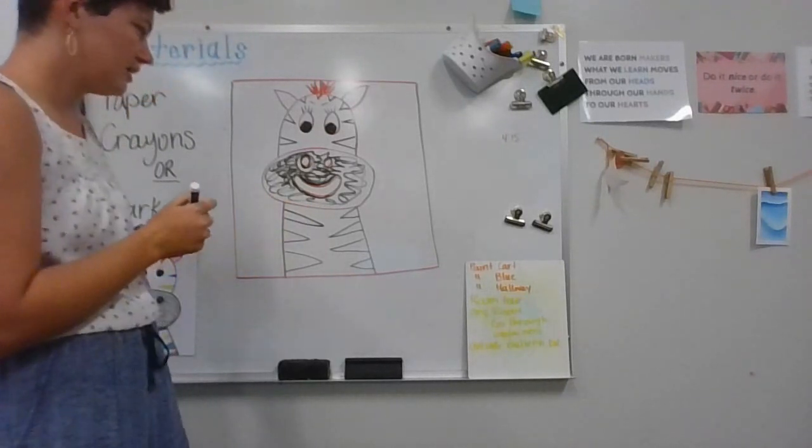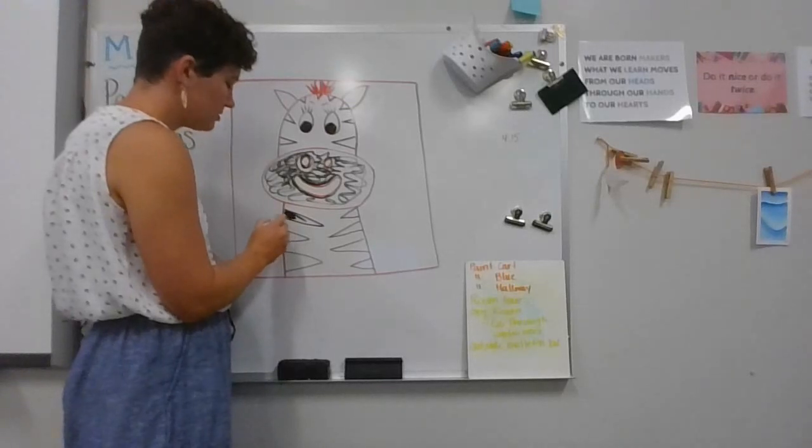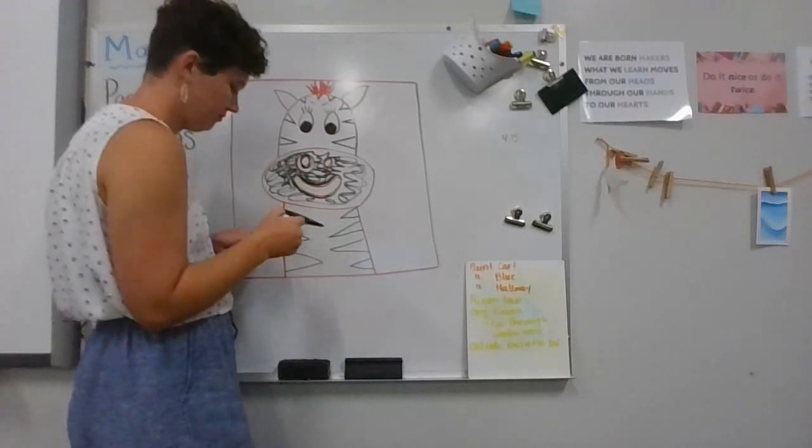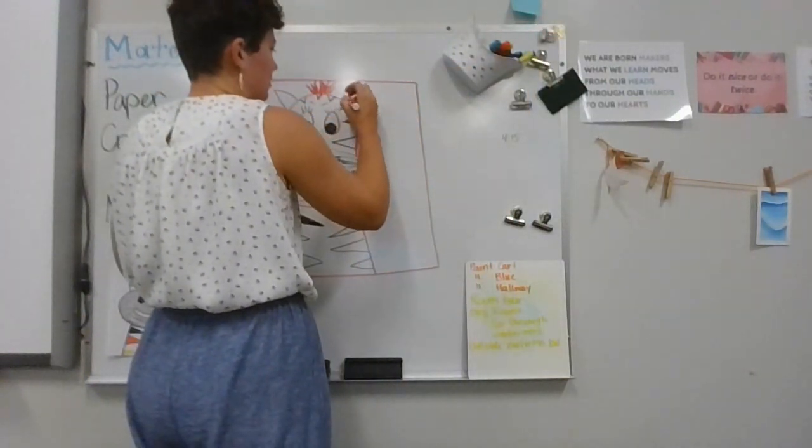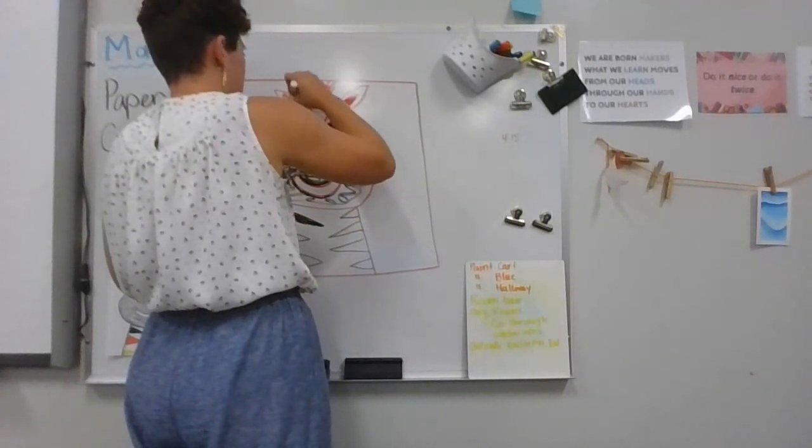And the last thing you're going to do after you color in all your stripes is you're going to give him some pink in his ears. Now I don't think I have a pink, so I'm going to use red. I'm going to color in the inside.